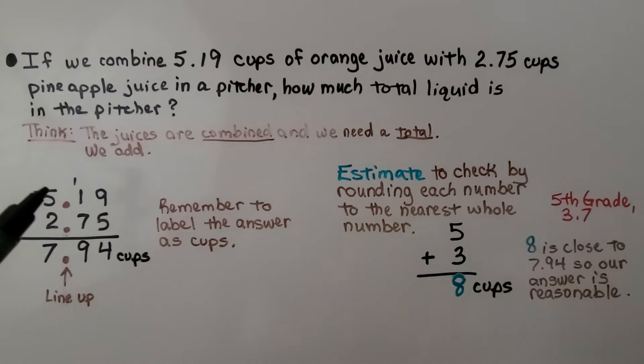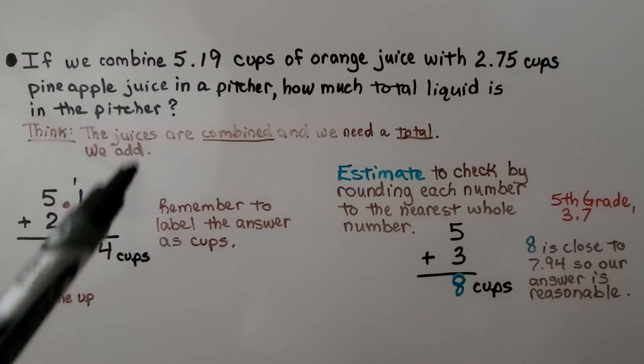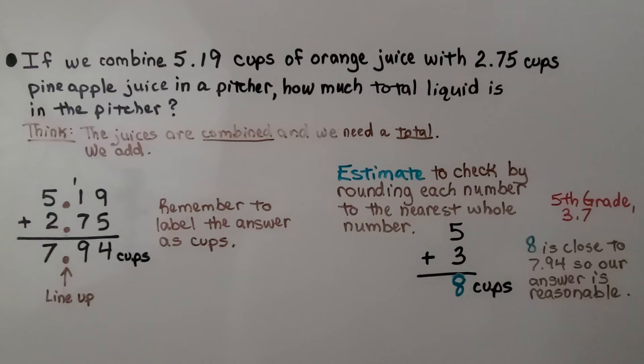We have them stacked nicely with their decimal points lined up. We add just as we would add regularly for an addition algorithm. And we regroup when needed. We make sure our decimal point is there. And we remember to label the answer as cups because we're talking about the quantity of cups of juice.